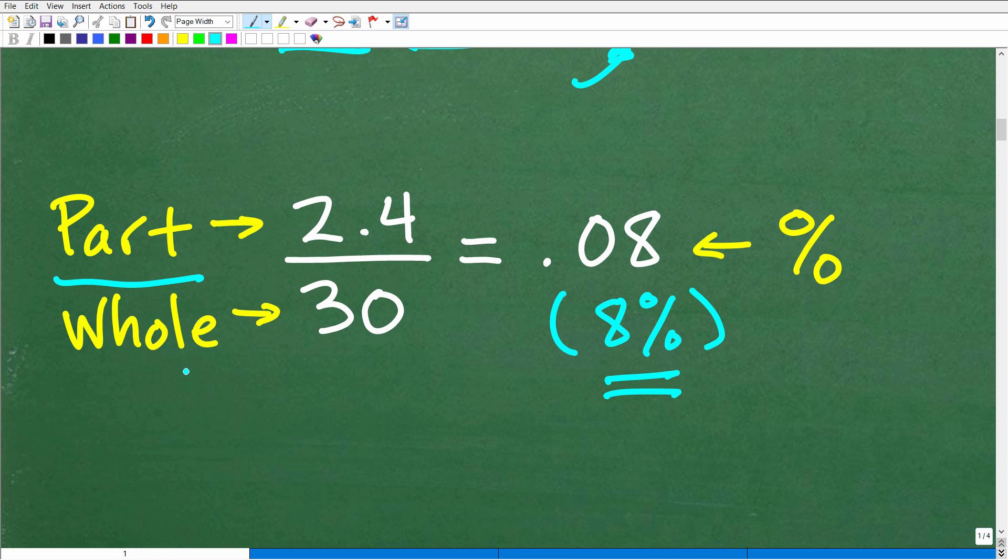So what part out of 30 is 2.4? How do we do that? Well, part out of a whole. You take that 2.4, divide it by 30 in your calculator, you're going to get 0.08. So this is your decimal. Well, we want a percent. So what do we have to do? We have to now multiply by 100.